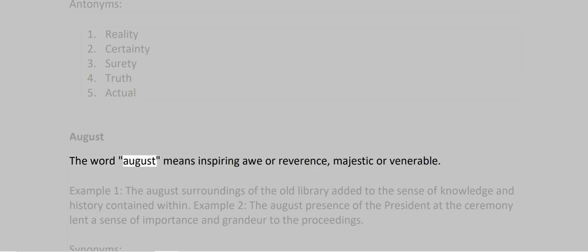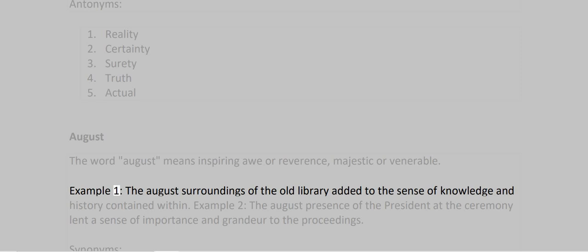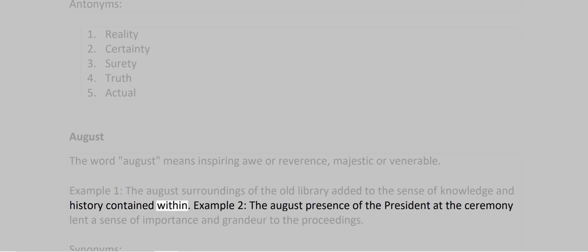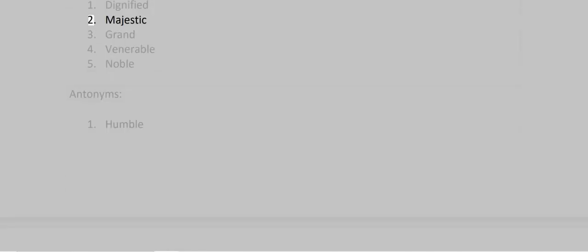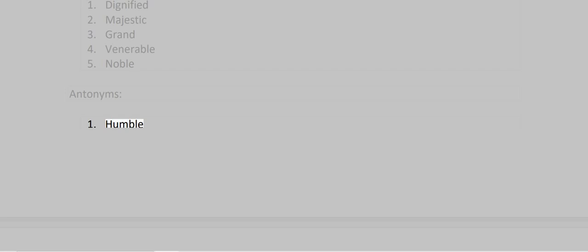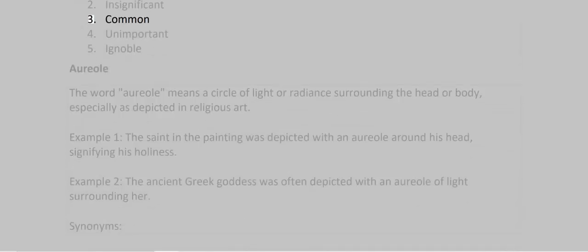August. The word august means inspiring awe or reverence, majestic or venerable. Example 1: The august surroundings of the old library added to the sense of knowledge and history contained within. Example 2: The august presence of the president at the ceremony lent a sense of importance and grandeur to the proceedings. Synonyms: 1. Dignified 2. Majestic 3. Grand 4. Venerable 5. Noble. Antonyms: 1. Humble 2. Insignificant 3. Common 4. Unimportant 5. Ignorable.